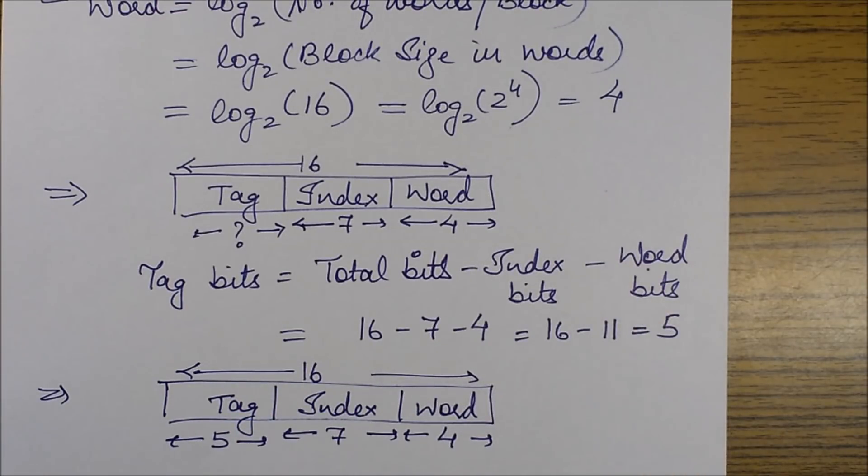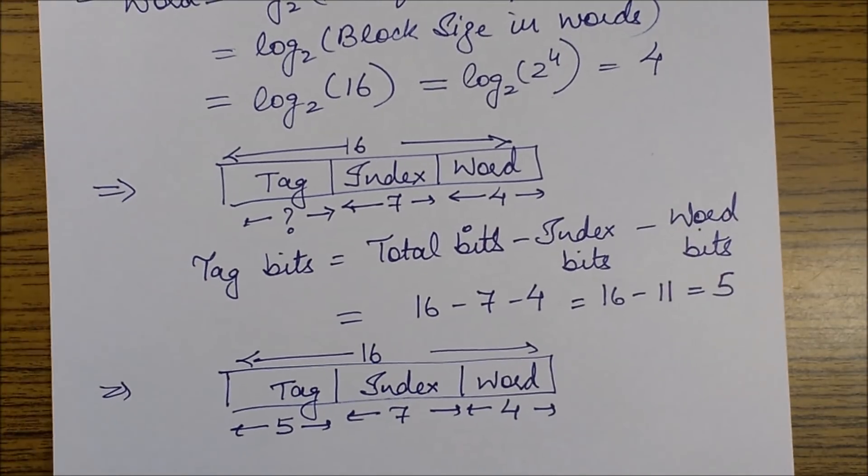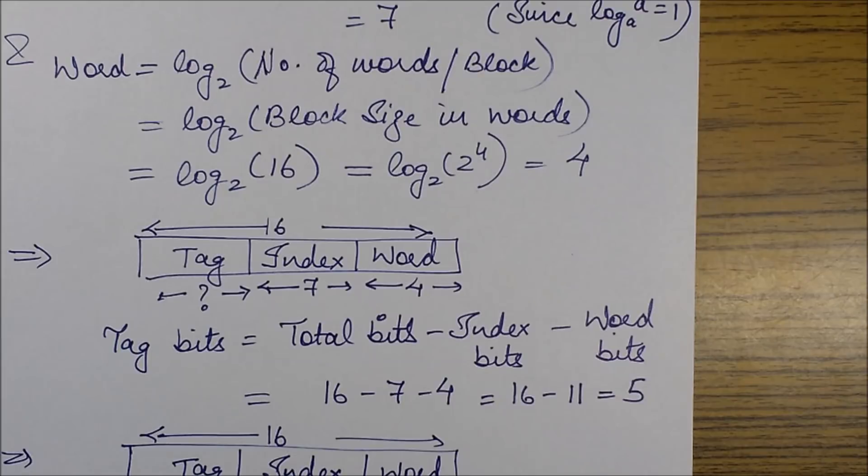The final answer is: tag bits are 5, index bits are 7, and the word bits are 4. That's all for a direct mapping address scheme. In the next video, I will be dealing with associative mapping and some other mapping techniques. See you all in the next video. Thank you.